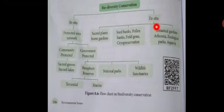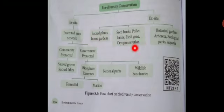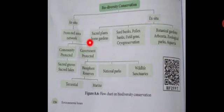Ex situ conservation includes sacred plants, home gardens, seed banks, pollen banks, field gene banks, cryopreservation, botanical gardens, arboretums, zoological parks, and aquariums. These are the biodiversity conservation methods shown in the flowchart.